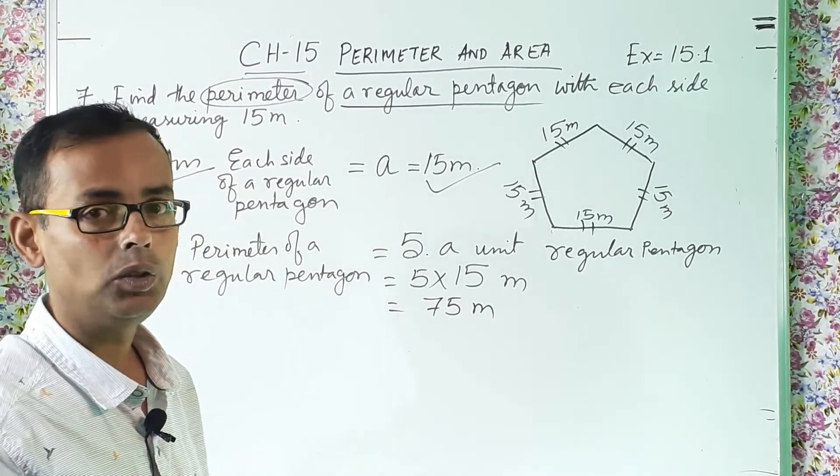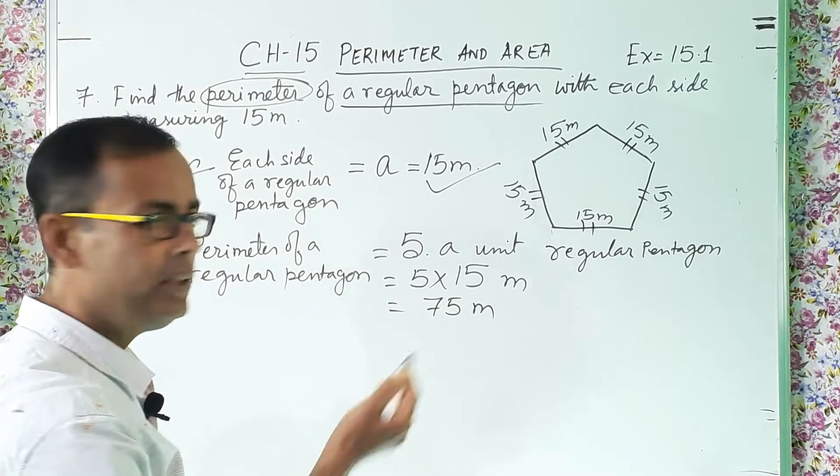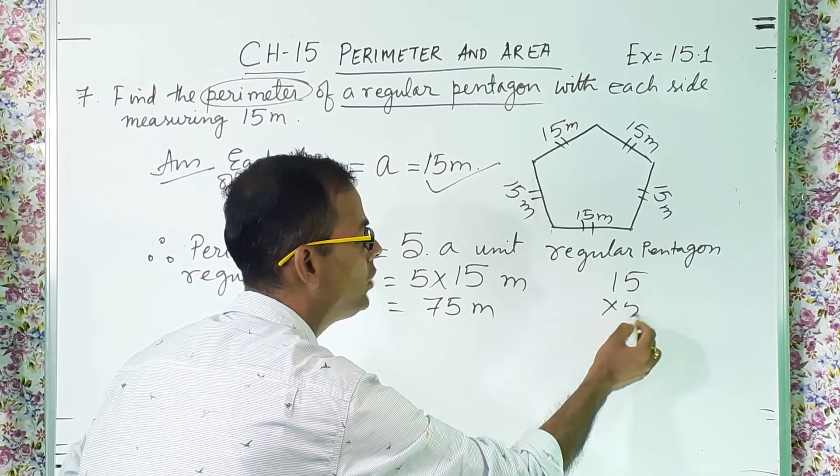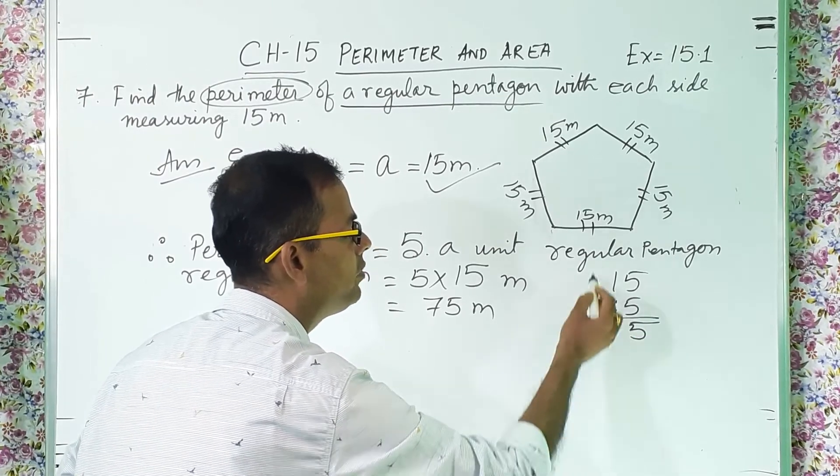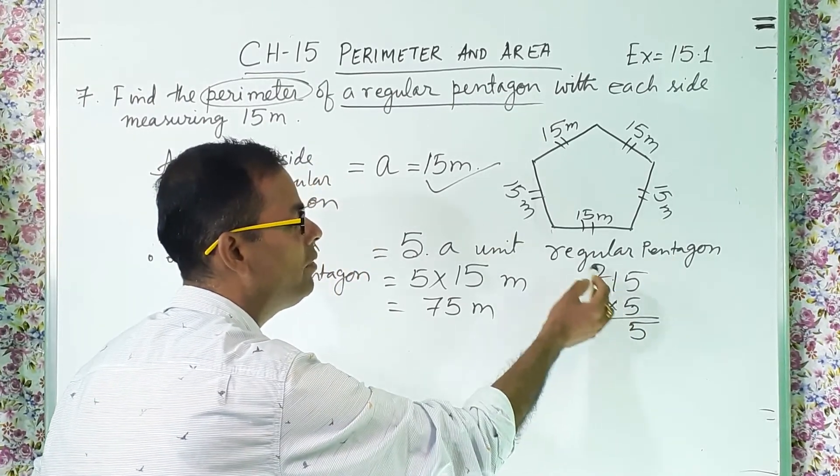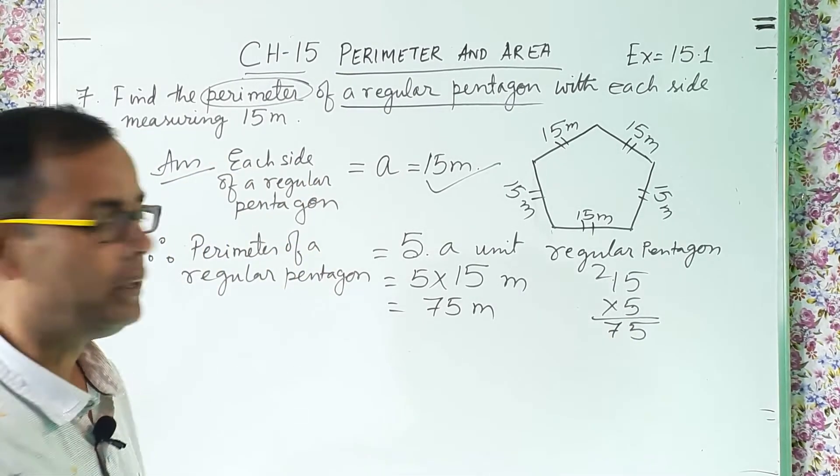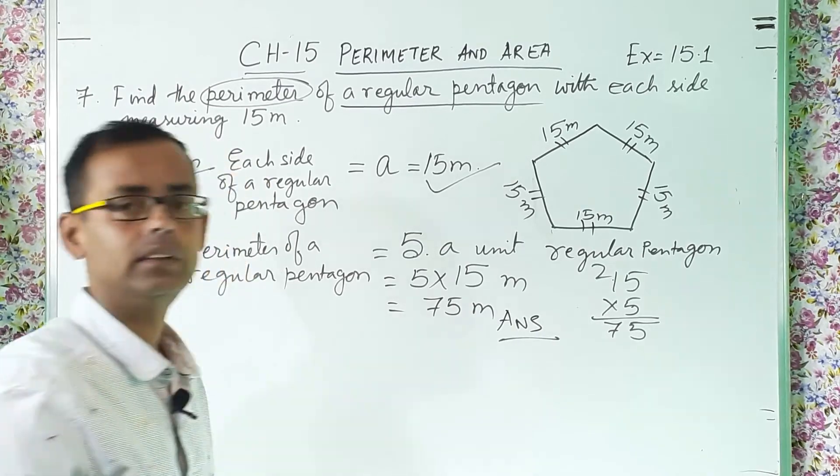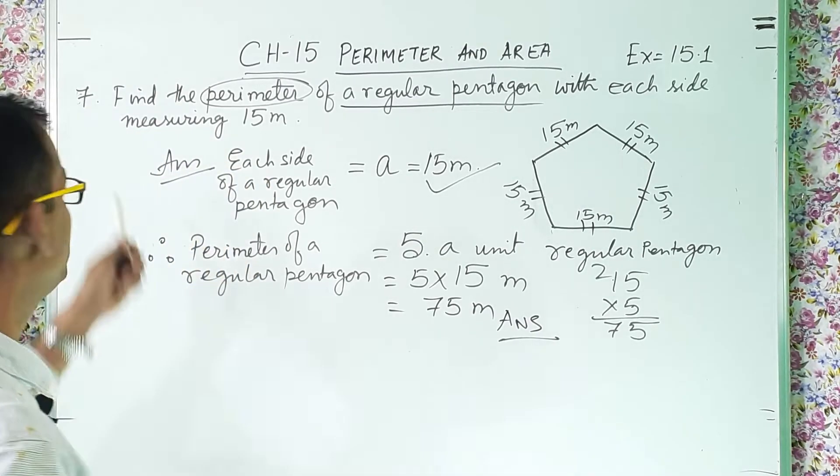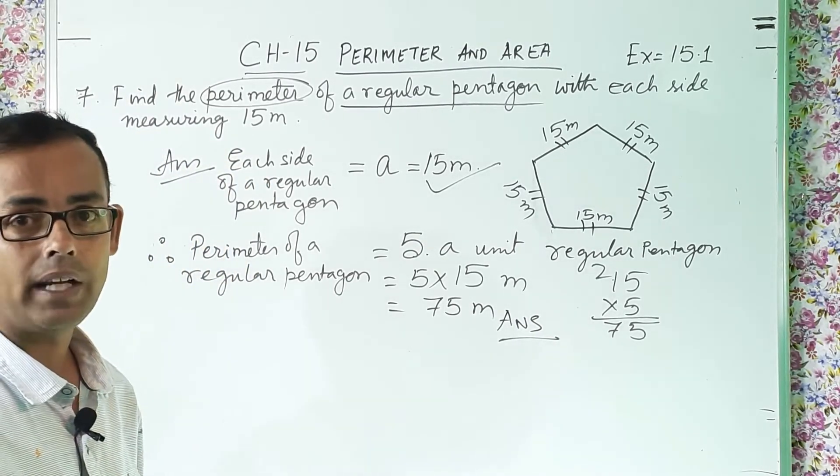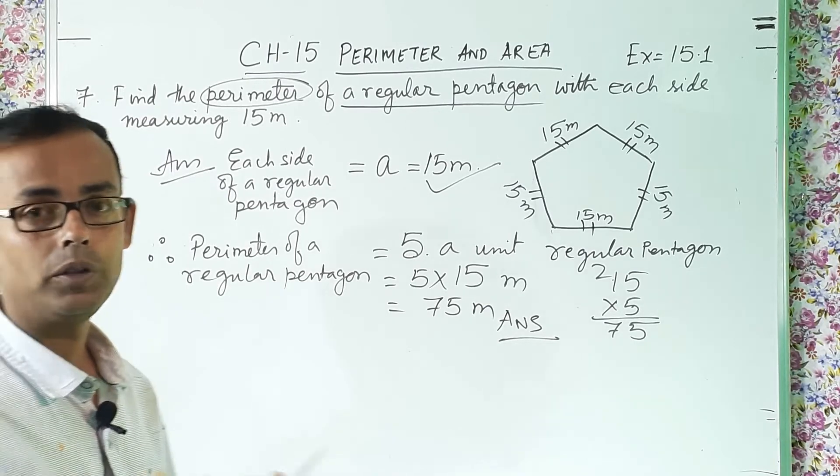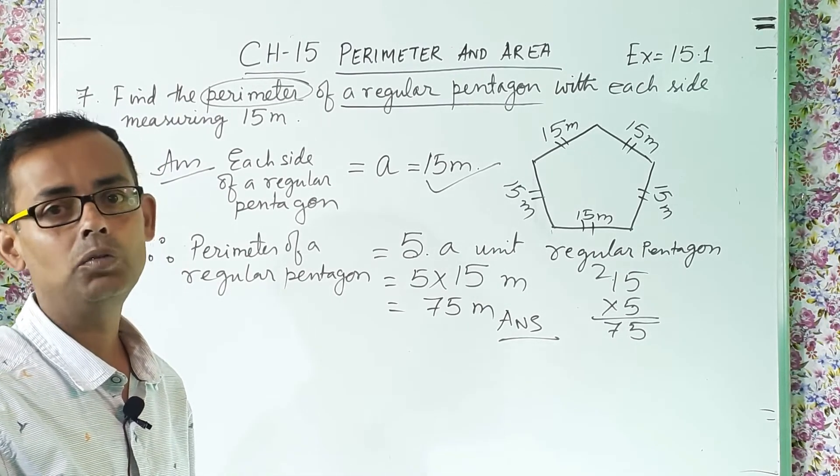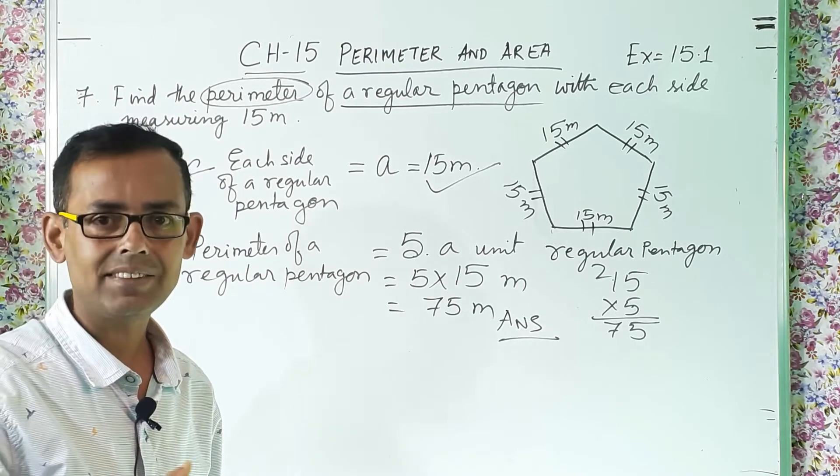Now if you cannot calculate orally, then you can do the rough like this way 15 into 5. 5 fives are 25, 2 carry, 5 ones are 5 plus 2, 7. So 75 meter and then you will highlight the answer. I think question number 7 is done. Take out your notebook and write down and keep on practicing. Now we will move on to the next sum.